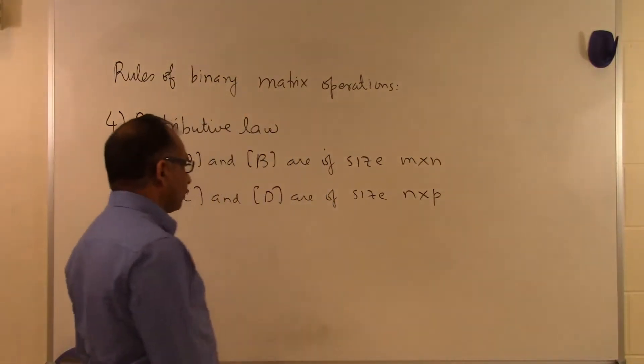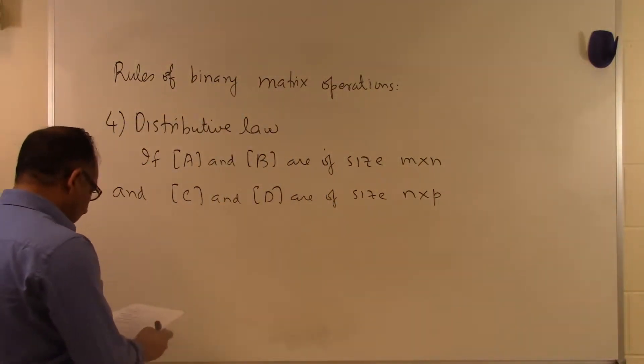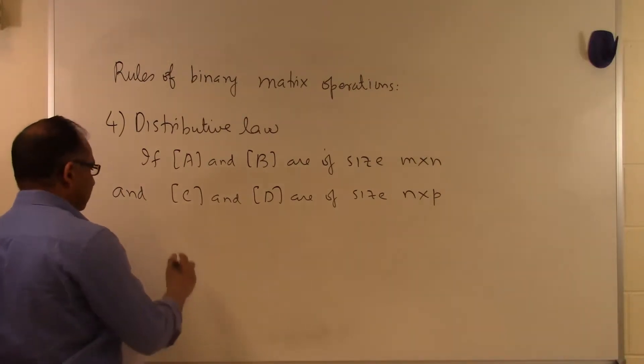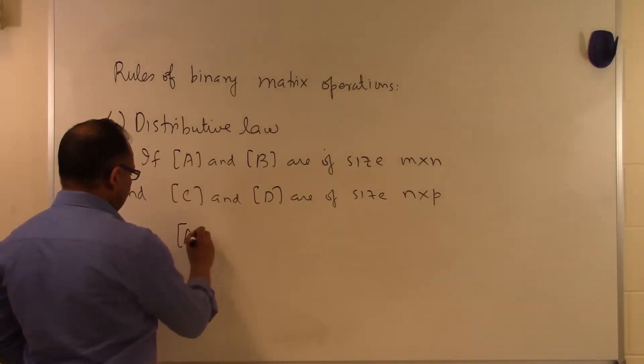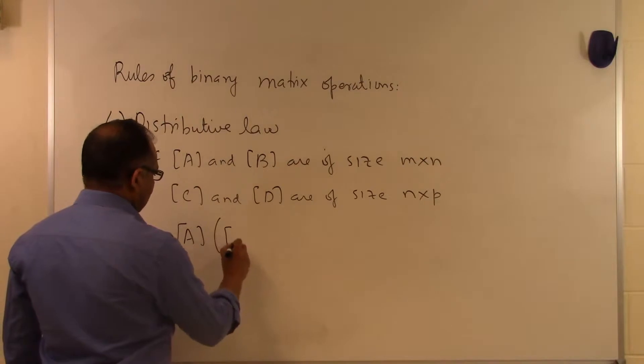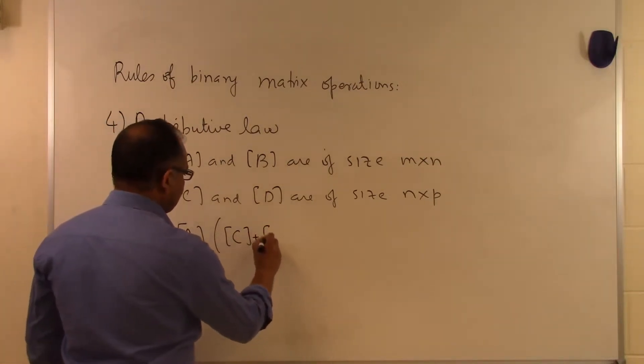And C and D are of size N by P, so N rows and P columns. Then the distributive law says two things.